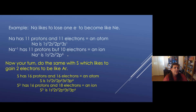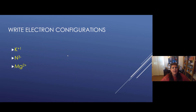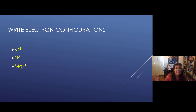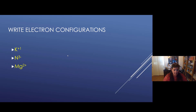You figure out the configuration for an ion by figuring out how many electrons it's gained or lost. Now I want you to write the electron configurations for potassium plus 1, nitrogen minus 3 (3 minus — same thing), and magnesium plus 2 (2 plus — same thing). Write the electron configurations for those three ions. Hit pause and work on this.